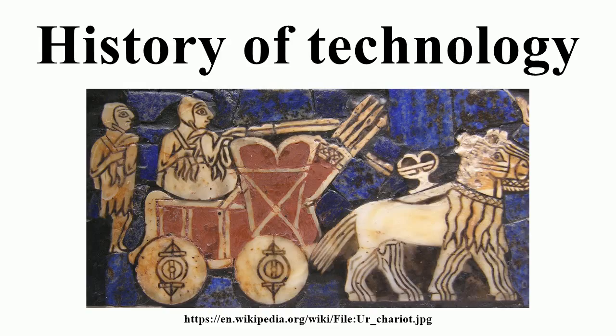White differentiates between five stages of human development. In the first, people use the energy of their own muscles. In the second, they use the energy of domesticated animals. In the third, they use the energy of plants. In the fourth, they learn to use the energy of natural resources — coal, oil, gas. In the fifth, they harness nuclear energy.